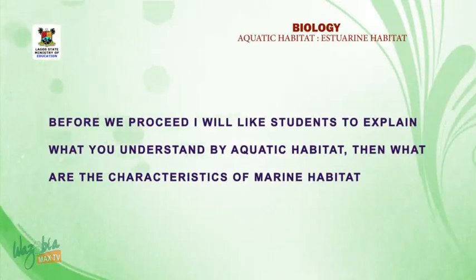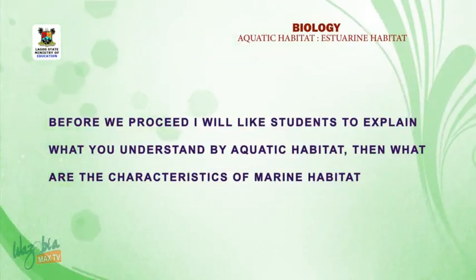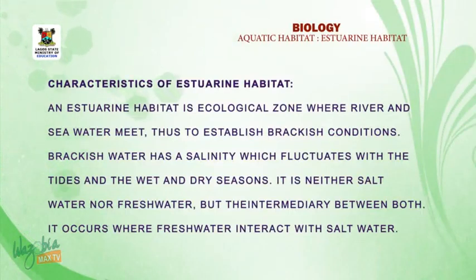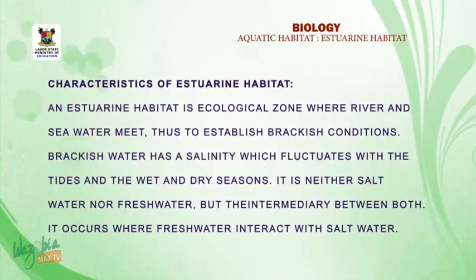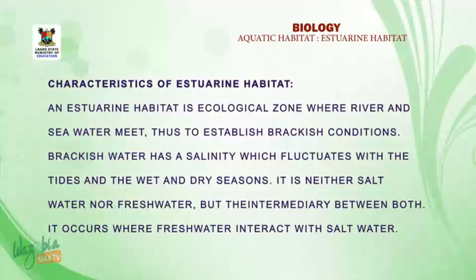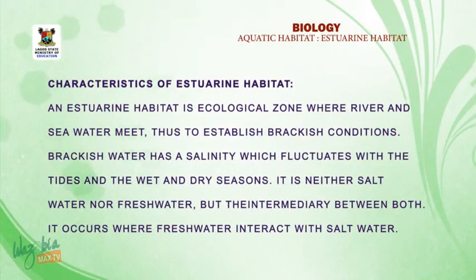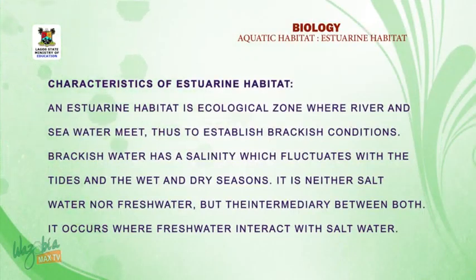Before we proceed, I would like the students to explain what you understand by aquatic habitat and the characteristics of marine habitats. Now, the characteristics of estuarine habitats: an estuarine habitat is an ecological zone where river water and sea water meet. A point where river water, which is fresh water, and sea water, which is salt water, meet — this creates brackish conditions. Brackish water has a salinity which fluctuates with the tides and the season, that is the wet and dry season.